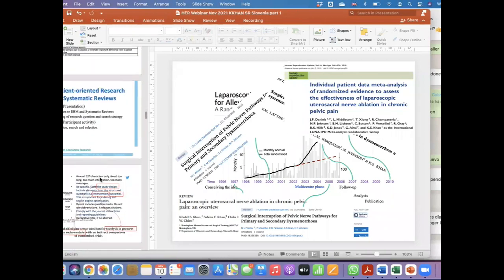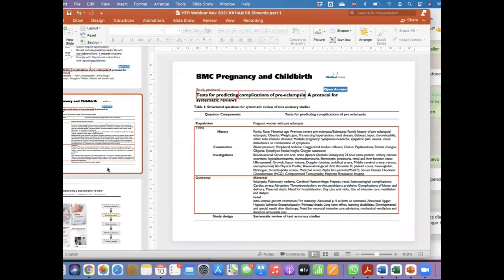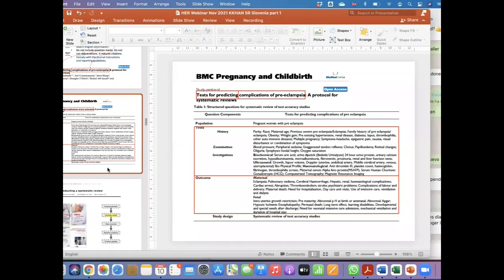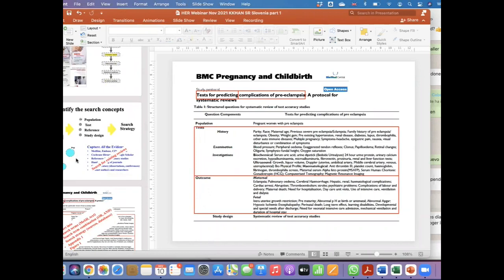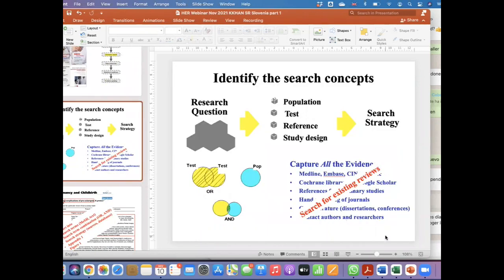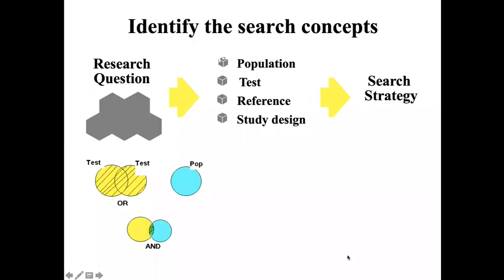For conducting a search, the first step is to re-examine your research question. In order to take you through an example, we first look at a little bit of an outline of how we think about conducting a search. We have our research question, which may have various components. In this example, we have population or participants. The review is about the accuracy of a test or a series of tests. The results of this test are compared with a reference standard test. And the study design for this type of question is called a test accuracy study.